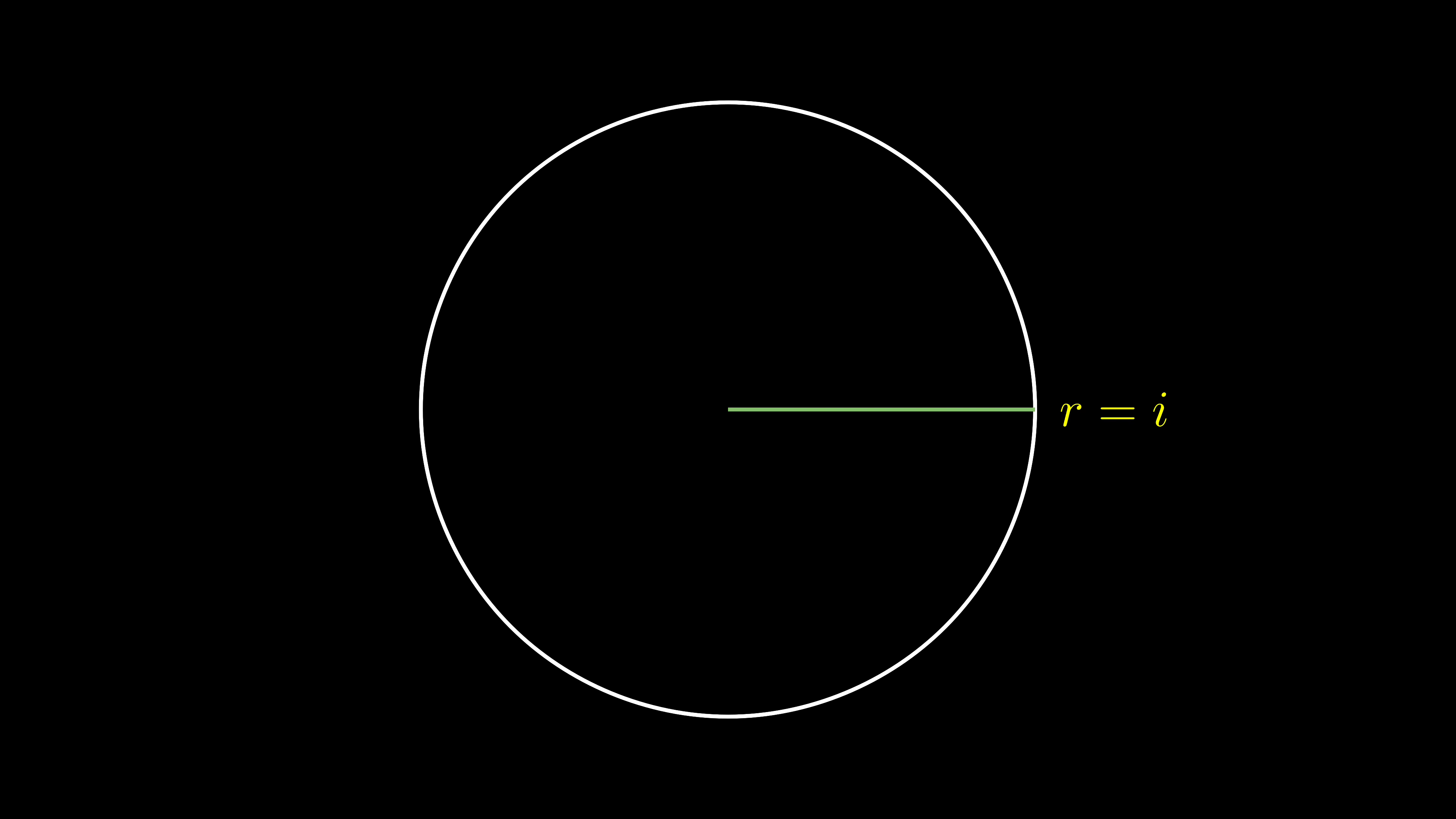I can shrink the circle to a point, but the radius becomes 0, not i. So we have to go back to algebra.